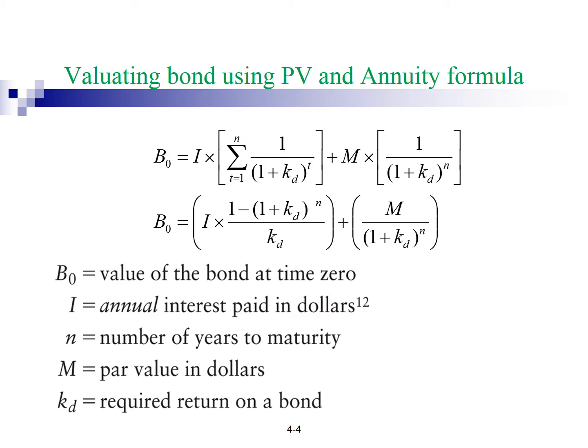If you like to model using formula, you can refer to this set of formula listed here. To value a security, we discount its expected cash flow by the appropriate discount rate. The cash flow from a bond consists of coupon payments until the maturity date plus the final payment of the par value. Therefore, bond value is equal to the present value of coupons plus the present value of the par value.